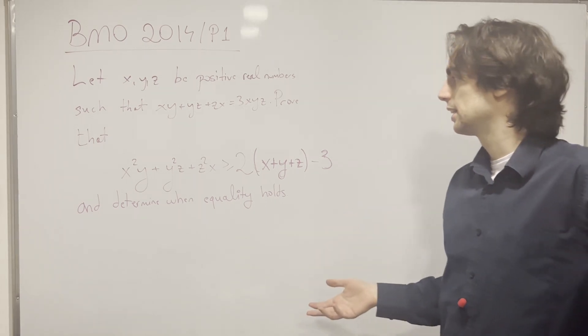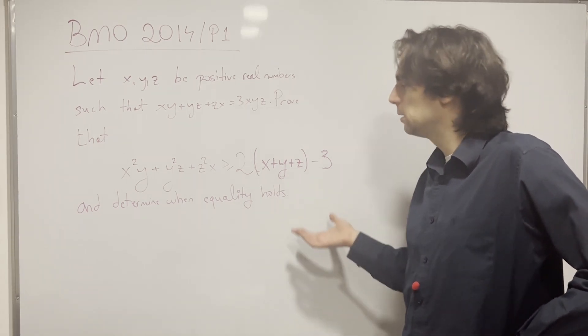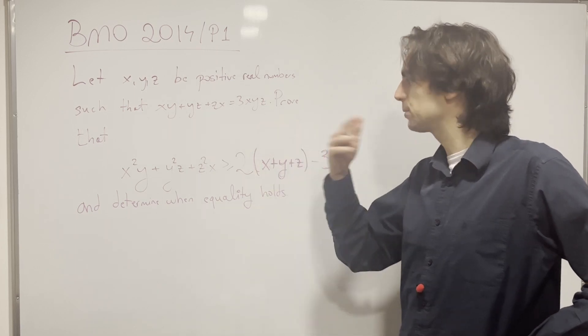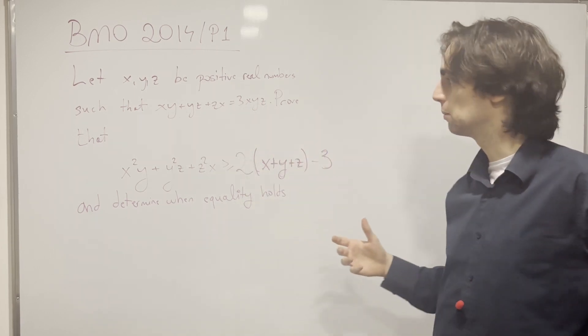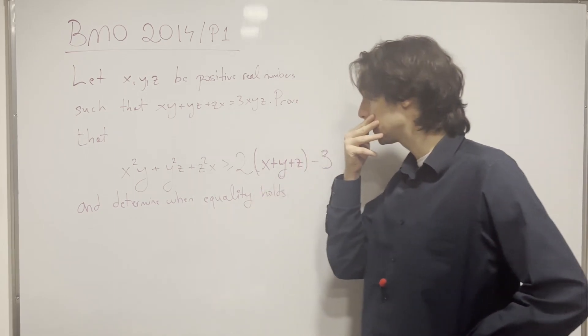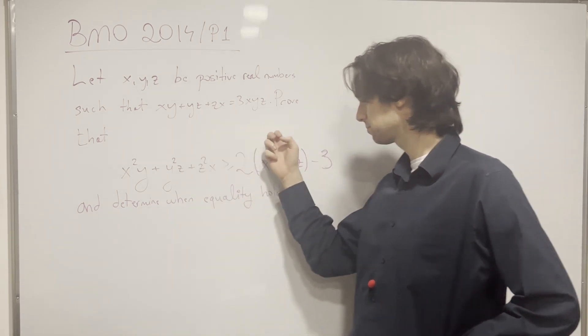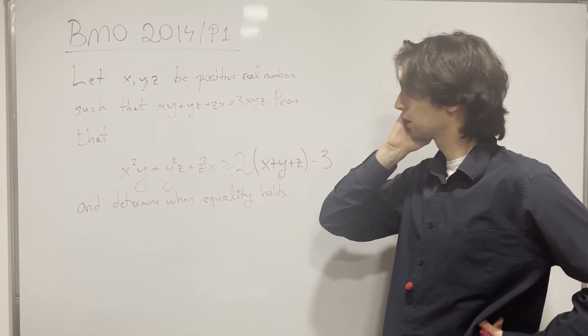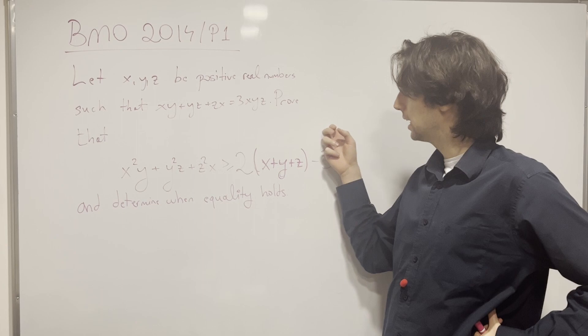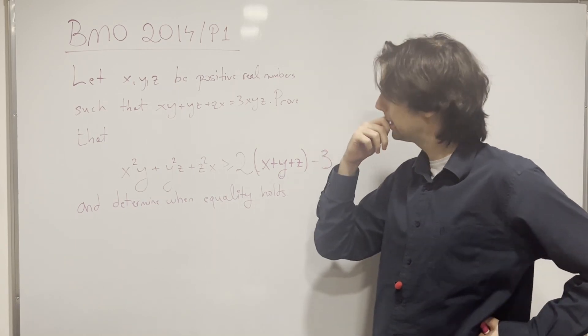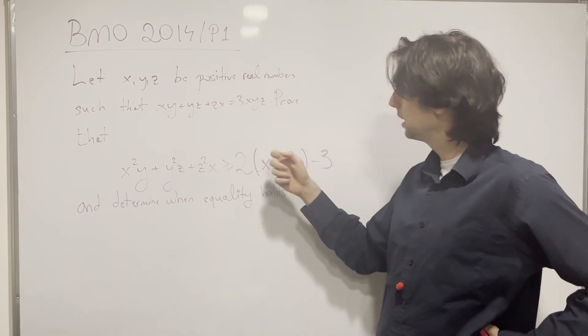Now, technically, we could make everything here of the same degree, right? We can multiply, say if you want, here, because this is of degree 3, 1 and 0. You can multiply this side by 3xyz. And actually, this you can multiply by xy plus yz plus zx.